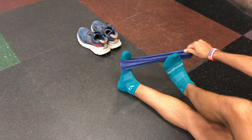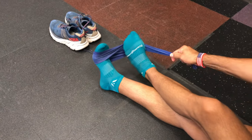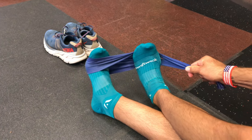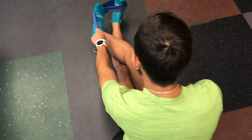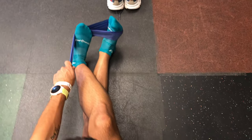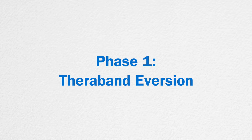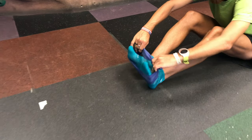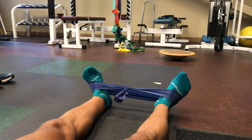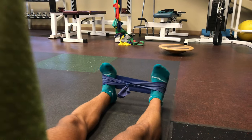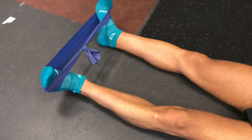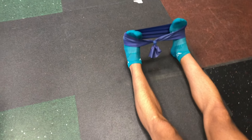Cross the unaffected leg over the affected one, then secure the band around the ball of the affected foot. Use your other foot as a fulcrum, hold the band with one hand, and pull the foot inward against the resistance of the band. Return slowly and smoothly to neutral. Begin by securing the thera-band around both feet. Allow your feet to start pointing inward, then pull against the resistance of the band until your feet point upward. Make sure to move your ankles only, keeping your legs completely still.